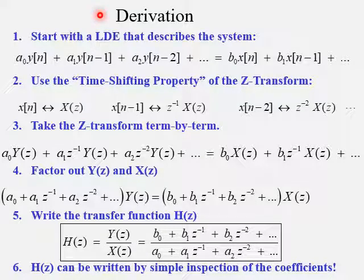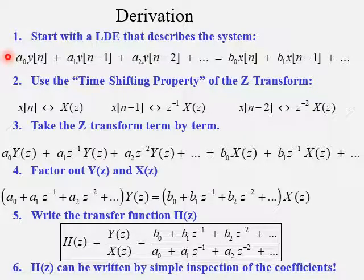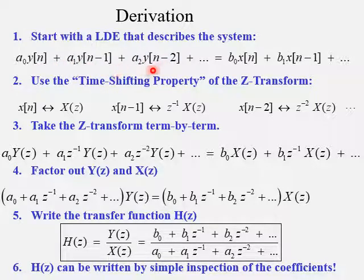Before I show you the quick and easy inspection method that we will be using, let's derive a useful result that leads to this inspection method. We're going to start with a linear difference equation that describes a discrete-time linear time-invariant system. This is the general form of a difference equation. On the left side, we have all the y terms, which are the outputs of the system. And on the right side, we have all the x terms, which represent the input signals to the system.